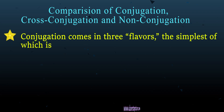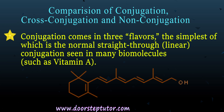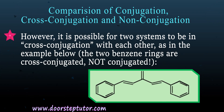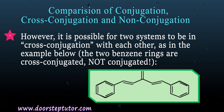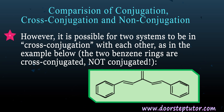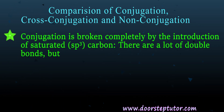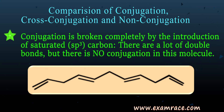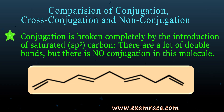Conjugation comes in three forms. First, normal linear conjugation as seen in biomolecules like vitamin A. Second, cross conjugation, where two systems are cross conjugated but not fully conjugated — as in benzophenone where the two benzene rings are cross conjugated. Third, non-conjugation, where sp3 saturated carbons completely break conjugation, so despite many double bonds present, no conjugation exists in the molecule.